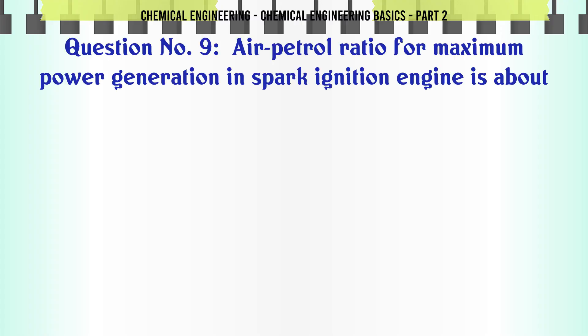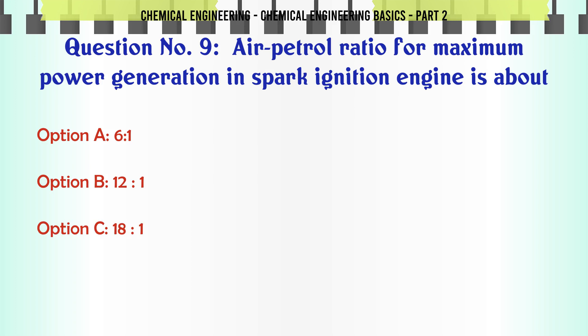Air-petrol ratio for maximum power generation in a spark ignition engine is about: a) 6:1, b) 12:1, c) 18:1, d) 24:1.